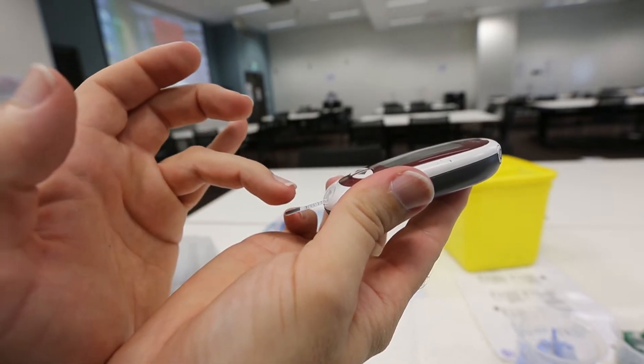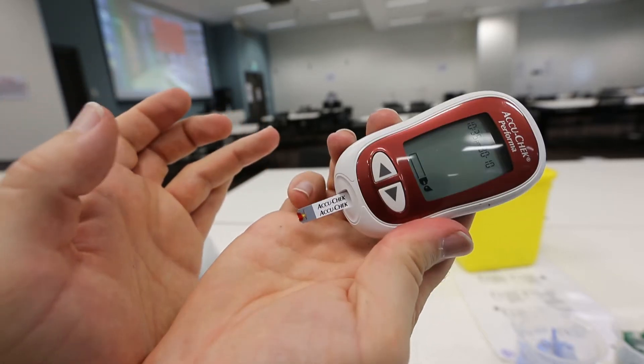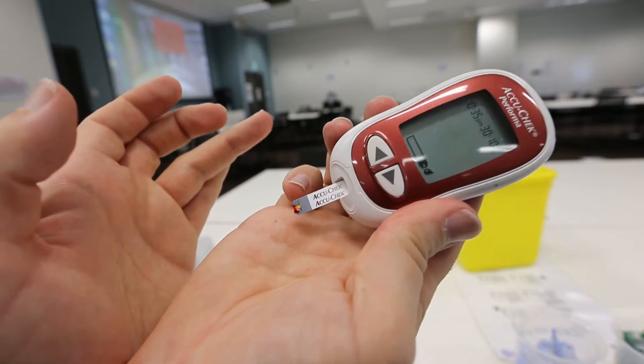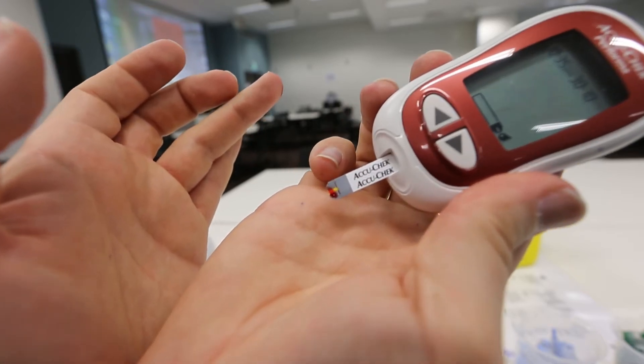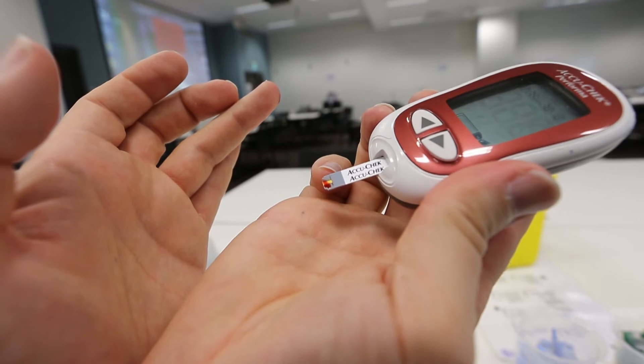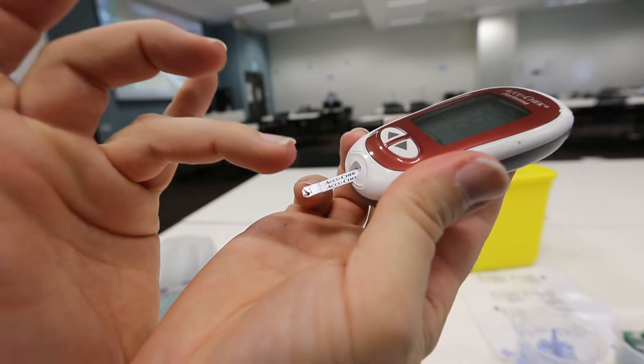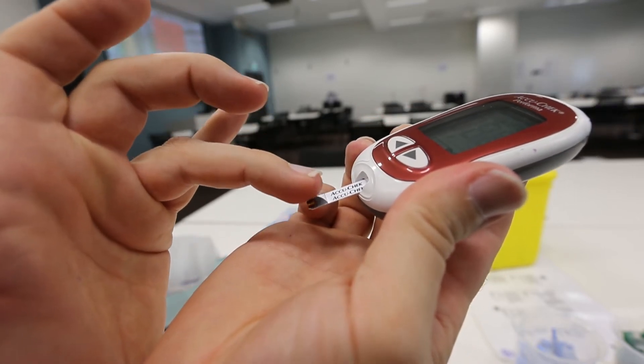Similarly, don't dab blood on top of the yellow test strip with your finger. As I said before, there is a plastic film over the top of the yellow test area, and so if you dab blood from the top of the test strip, the blood will not reach the test area.